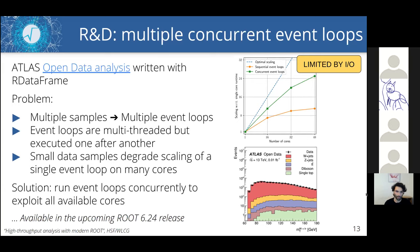Even though RDataFrame is in production and widely used, we want to strive for better performance. For instance, we tried running an ATLAS open data analysis with RDataFrame where multiple data samples are each processed in their own multi-threaded event loop — which is nice — but the different samples are executed one after the other. If one data sample is too small, it creates high overhead when processed across a large number of cores, hindering overall performance. Our solution is to start all event loops concurrently, exploiting all available cores. This feature is already in ROOT master and will be available in the upcoming 6.24 release.